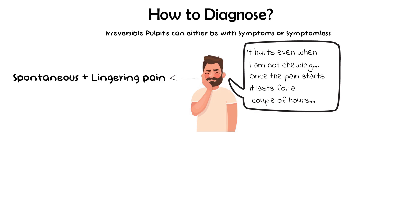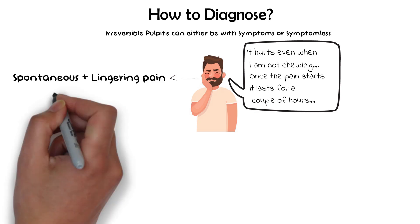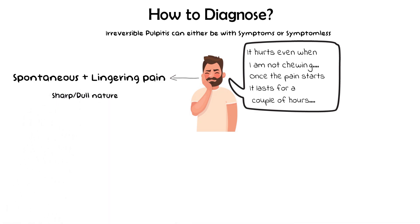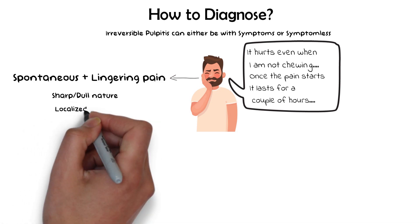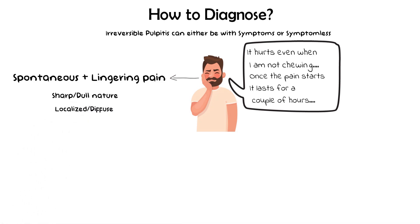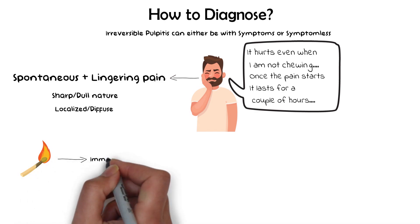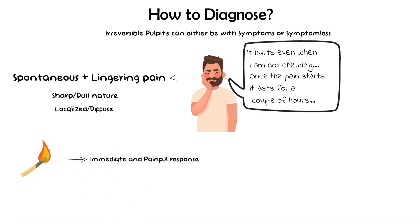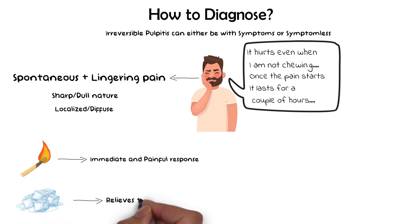This may happen in an episodic manner from time to time, or may be continuous in nature. Pain from irreversible pulpitis is usually sharp or dull, and can be localized to the tooth or diffused. Application of heat results in an immediate painful response, while cold stimulus may relieve the pain, because cold causes vasoconstriction of the nerves and relieves pain.